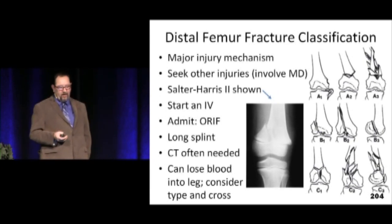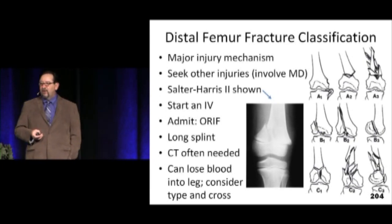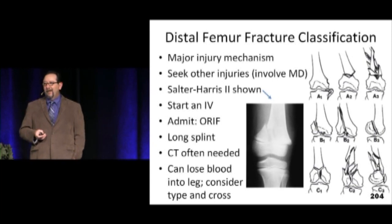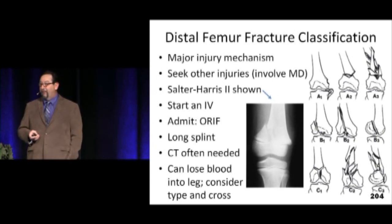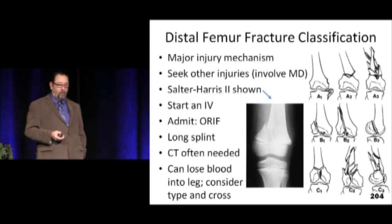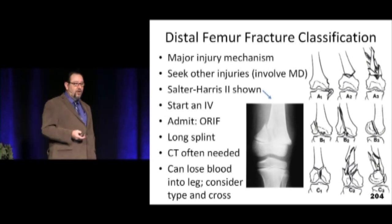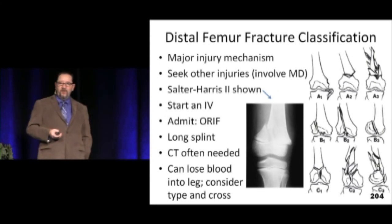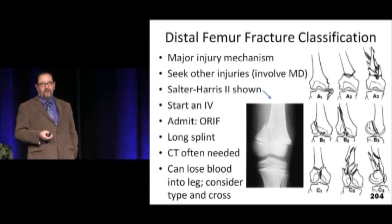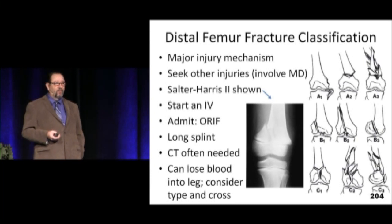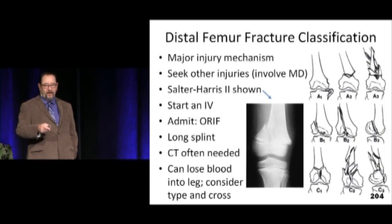A femur fracture can result in a liter to a liter and a half of blood loss, so they may need a line and resuscitation. It's appropriate to type and cross them. You want to splint these, and they all need admission for pain control — these are not referable out to the office.